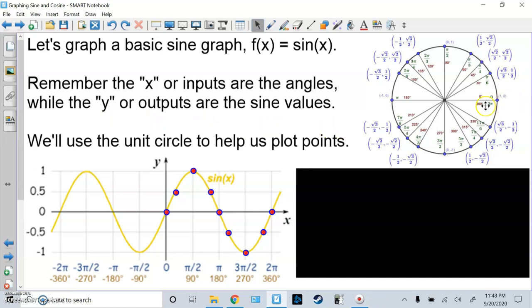Starting at sine of 0 degrees, or 0 radians, the y value is 0. Then sine of 30 degrees, or pi over 6 radians, gives us the y value of 1 half. So when the angle is pi over 6, the result is 1 half. The next nice number is at pi over 6. If I go sine of 90 degrees, or pi over 2, it gives us the y value of 1.